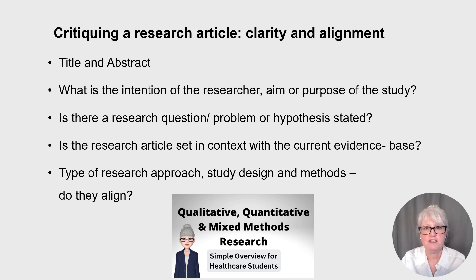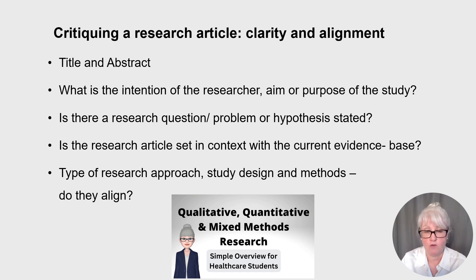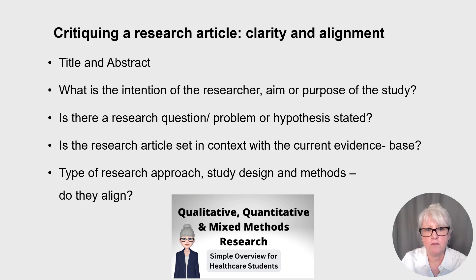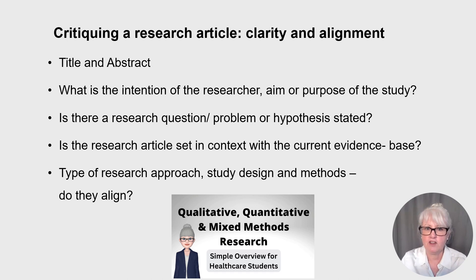A few areas to look at when critiquing any research paper: the first thing you read is the title and abstract. The title needs to be clear — you're checking whether it marries up with what the research is actually about, or whether it is ambiguous and confusing. For example, if a title states the study is examining the experiences of student nurses who fail their assignments, but when you look at the study it's actually looking at students who failed their competences on placement — not failing academic essays — then the title doesn't marry up with the study.